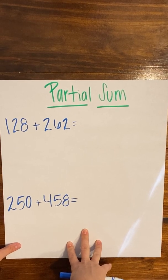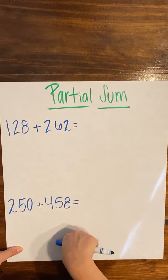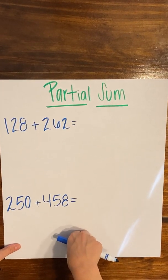So with partial sum, you're going to want to use this when you can see that there are parts of your two addends that would easily add together to give you more friendly numbers.